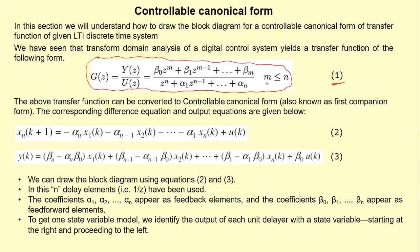The required difference equations obtained are given by equations two and three. We need to draw the block diagram of these two equations. Since it is an nth order system, we will be having n delay elements. A delay element is nothing but 1/z or z-inverse. Symbolically, we represent a delay by a specific symbol.